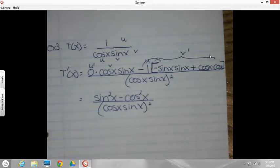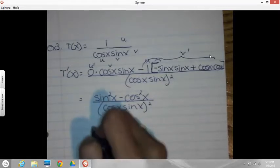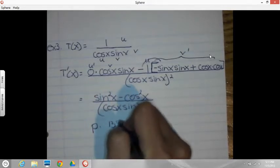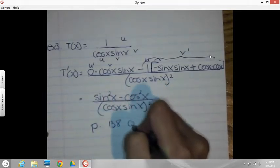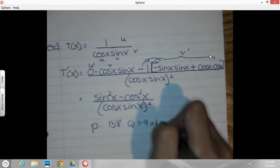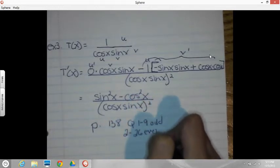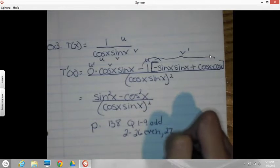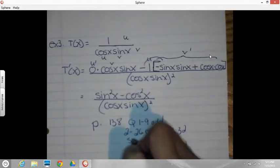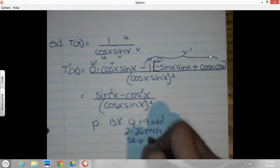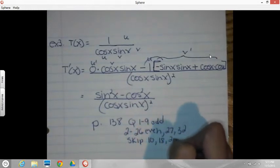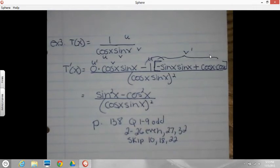Okay, the assignment then will be this was 4-3 day 2, page 138, quickies 1-9 odd, 2-26 even, 27, 32, skipping several that I just did, 10, 18, and 22. Okay, that's it.